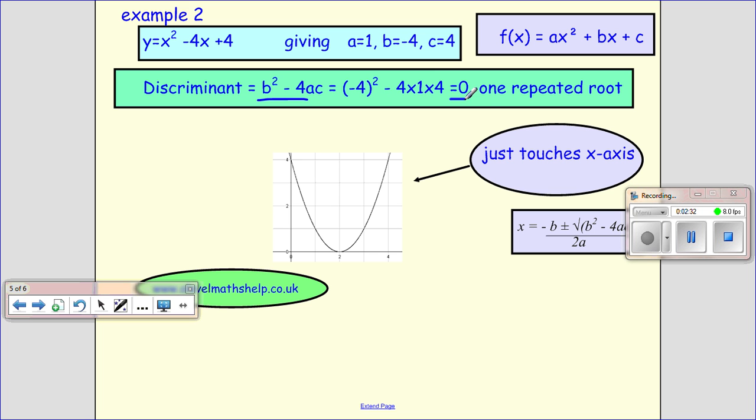and we end up, it equals 0. And that means we have one repeated root. That means it just touches our x-axis in one place.